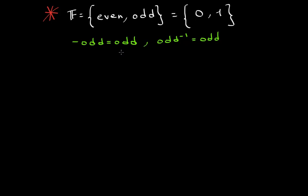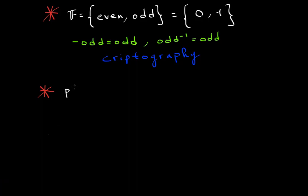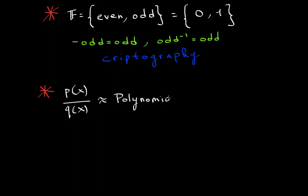Another important field — and this one is important for cryptography — is rational functions: numbers that can be put in the format p(x) over q(x). Generally, we will talk about polynomials later on in a sequence video as well, but these are important for geometry. You can spend time proving that these are fields as well, and I can tell you that they are.